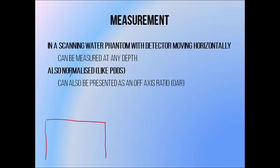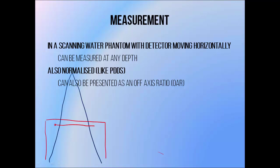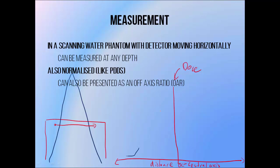Beam profiles are measured in a scanning water phantom by moving a detector from side to side while the beam is on. Just like we discussed in the video on percentage depth dose curves, profiles are normally normalized. This means that we take one point on the profile, normally at the center, and divide the dose of every point in the profile by the dose of this normalization point, then multiply it by 100. This gives us a beam profile expressed as a percentage of the dose of the normalization point.